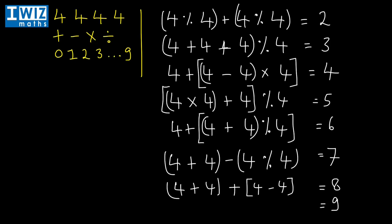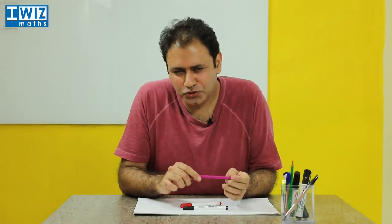To get to nine: nine is eight plus one. Four plus four gives eight, and four divided by four gives one, so eight plus one gives nine. That brings us to the end of this puzzle — we're done with the original puzzle.